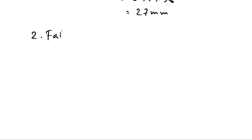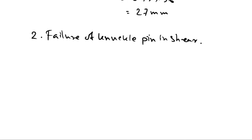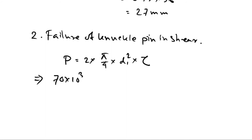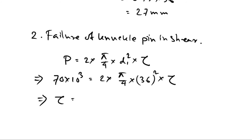For pin design — failure of the knuckle pin in double shear. Load P = 2 × (π/4) × d1² × τ. Substituting values: 70 × 10³ = 2 × (π/4) × (36)² × τ. Solving, the induced shear stress τ = 34.4 N/mm², which is less than the permissible shear stress of 66 N/mm². Therefore the pin design in shear is safe.